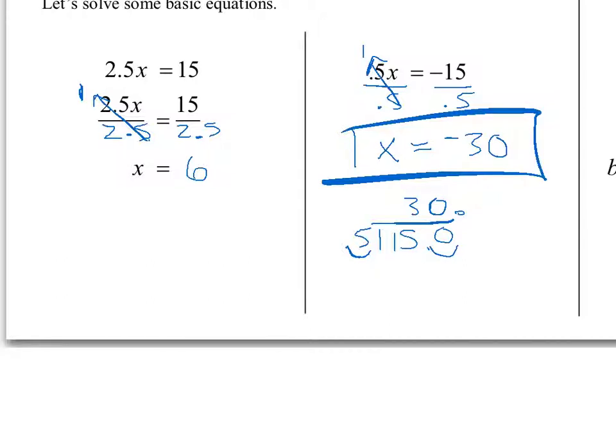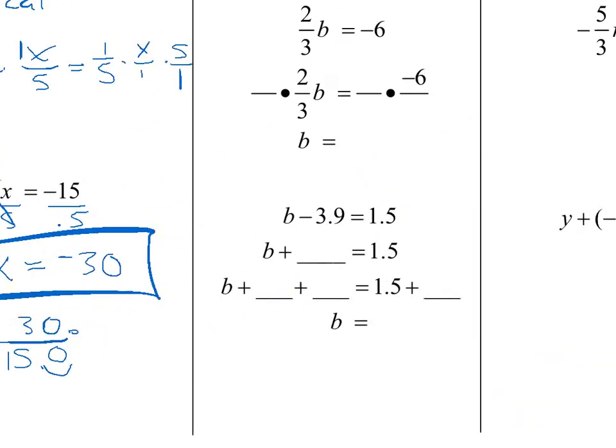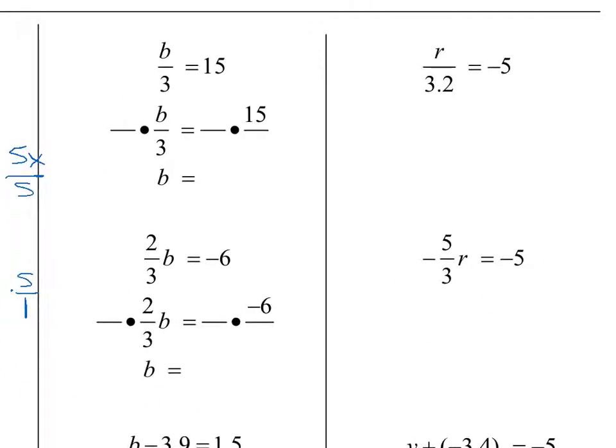That makes a lot of sense to us based on things we already know. Doing inverses of multiplications is really simple because it's something we've done before. Now, looking at this next problem, we have B divided by 3 equals 15. We want to do the opposite of what has happened to our unknown. What did we say was the inverse operation for division? Multiplication. So we're dividing by 3, and in this case we're going to multiply by 3.